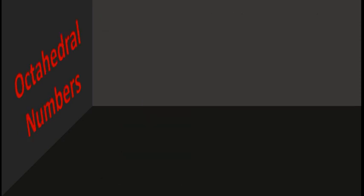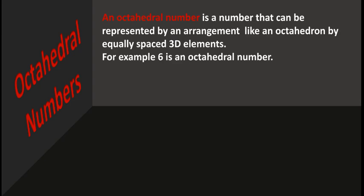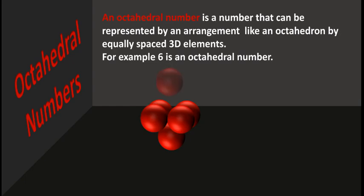Octahedral numbers. An octahedral number is a number that can be represented by an arrangement like an octahedron by equally spaced 3D elements. For example, 6 is an octahedral number — we can arrange 6 elements like an octahedron, so 6 is an octahedral number.